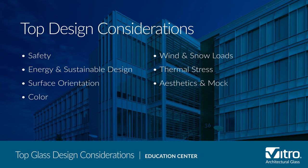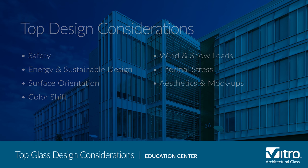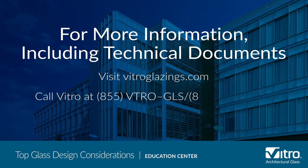Today we covered the main considerations involved when selecting or specifying glass, including safety, energy and sustainable design, surface orientation, color shift, wind and snow loads, thermal stress, and aesthetics and mock-ups. Keeping these and other factors in mind will help ensure an aesthetically amazing project that also delivers top-of-the-line performance. For more information about any of these topics, including related technical documents, please visit vitroglazings.com or call 855-VTRO-GLS, 855-887-6457.